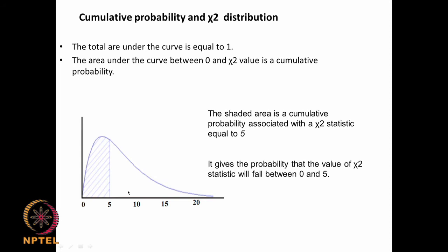The area under the curve between 0 and any chi-square value is the cumulative probability. The distribution has a long tail due to its positive skewness — it rises very fast and then falls slowly. If chi-square equals 5, the shaded area gives the probability that the chi-square statistic falls between 0 and 5, just like in t or normal distributions.